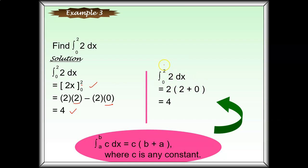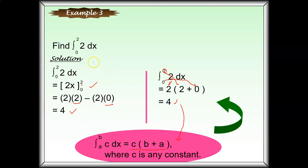So based on the property, the integration of a constant C from A to B can be written as C times (B minus A). This is another method that makes it clear — first you integrate, then substitute the values. Both methods give the same answer of 4. It's up to you which method you use.